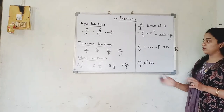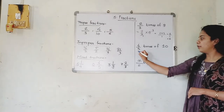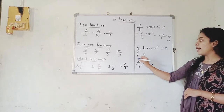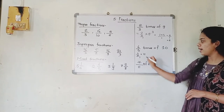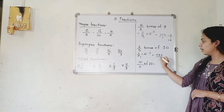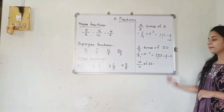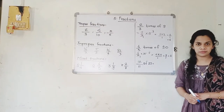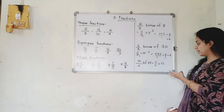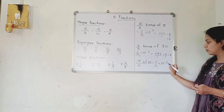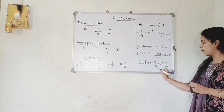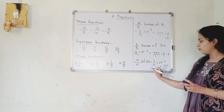Next question: 4 upon 5 times of 10. We write 4 upon 5 multiplied by 10. In the 5 times table, 10 occurs — 5 twos are 10 — so 5 and 10 cancel, giving 1 and 2. What remains is 4 into 2 in the numerator and 1 in the denominator: 8 upon 1, which is 8. The last part is 7 upon 11 of 22. 'Of' means multiplication, so 7 upon 11 multiplied by 22. In the 11 times table, 11 twos are 22. So 7 multiplied by 2 is 14 upon 1, which is 14.